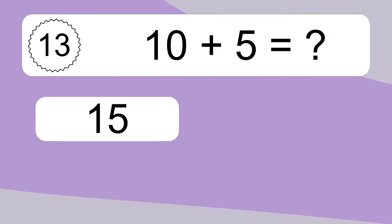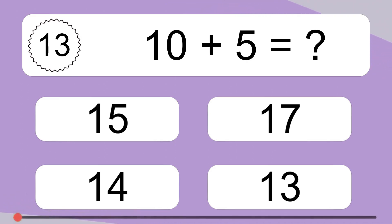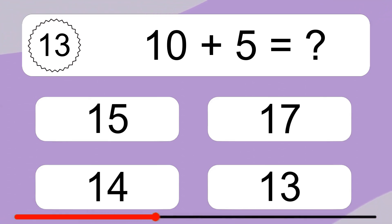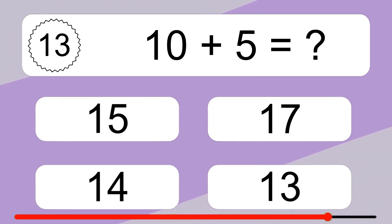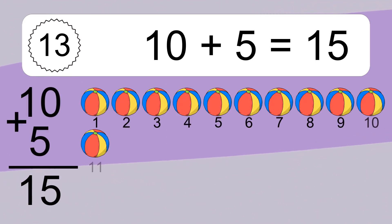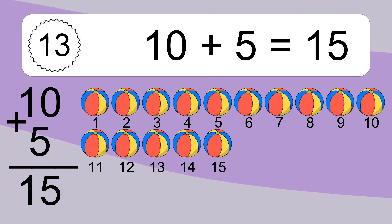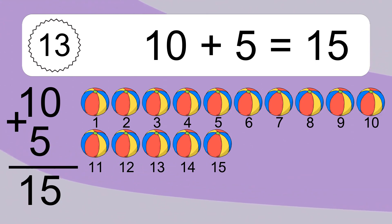10 plus 5 equals what? 10 plus 5 equals 15. Let's count it: 1, 2, 3, 4, 5, 6, 7, 8, 9, 10, 11, 12, 13, 14, 15.